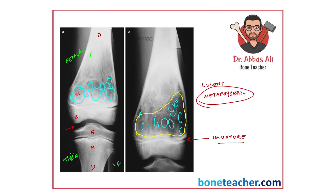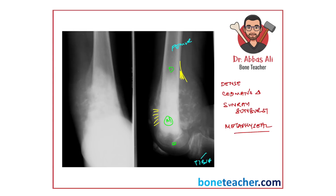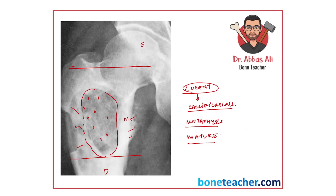Now, having seen those three images, let's return to the first image and reach a diagnosis. The second image — a metaphysial lesion in an immature skeleton, lucent, multi-loculated, multi-septate — that is your aneurysmal bone cyst. Keywords: metaphysial, multi-loculated, multi-septate, expansile, slightly eccentric, immature skeleton. The third image — radio-dense, radio-opaque lesion in the metaphysis, Codman's triangle, sunray/sunburst appearance — that is your classical osteosarcoma.